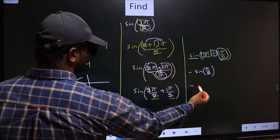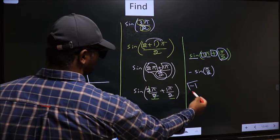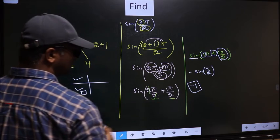So negative sin π by 2 is 1. So this is our answer.